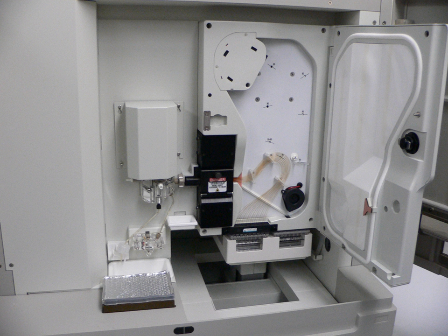Functional genomics is a field of molecular biology that attempts to make use of the vast wealth of data produced by genomic projects to describe gene functions and interactions. Functional genomics focuses on the dynamic aspects such as gene transcription, translation, and protein-protein interactions, as opposed to the static aspects of the genomic information such as DNA sequence or structures. Functional genomics attempts to answer questions about the function of DNA at the levels of genes, RNA transcripts, and protein products. A key characteristic of functional genomic studies is their genome-wide approach to these questions, generally involving high-throughput methods rather than a more traditional approach.